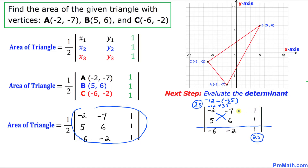Now let's crisscross the next two columns. Negative 7 times 1 is negative 7. Minus 1 times 6 is 6. So that gives us negative 13. This negative 13 goes on the opposite side as well.